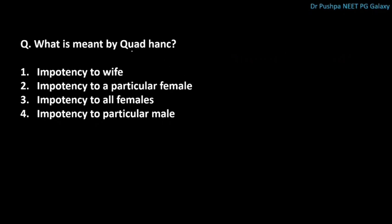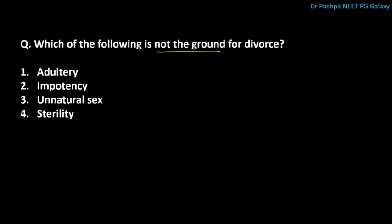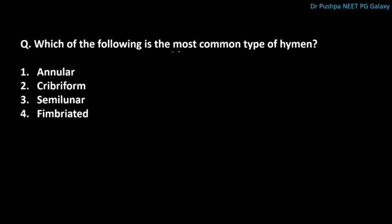What is meant by kolhank? The correct answer is impotency towards a particular female — this is psychological. If present since the time of marriage, it can be grounds for nullity of marriage. Which of the following is not a ground for divorce? The correct answer is sterility. Which is the most common type of hymen? The correct answer is the semilunar type. Annular is the second most common.